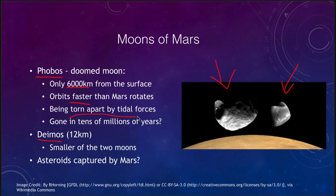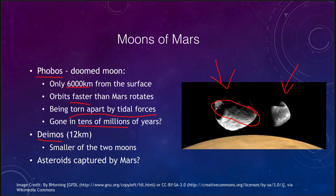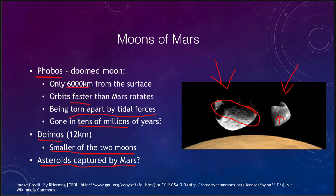Phobos is being torn apart by tidal forces. You can see some of the stress lines that are actually beginning to slowly pull it apart. That doesn't mean it will be gone tomorrow or even in a decade, but in millions or tens of millions of years it will likely have been ripped apart and crashed into the surface of Mars, leaving Mars with just one moon. Deimos is the smaller of the two, and on both moons we do see impact craters — they've been hit by smaller objects. We don't believe they formed through a giant impact like the Earth's moon; more likely these are asteroids captured by Mars, since Mars is so close to the asteroid belt.